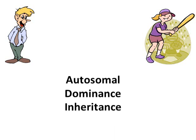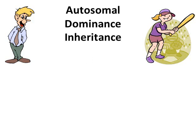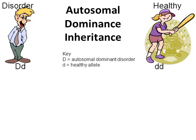In this presentation we're going to go over the genetic inheritance pattern known as autosomal dominance. We have a husband and wife — the husband has an autosomal dominant disorder with genotype capital D lowercase d, heterozygous. The mother is healthy, so her genotype is homozygous recessive, two lowercase d's. This is already giving us a clue as to the pattern of autosomal dominance.